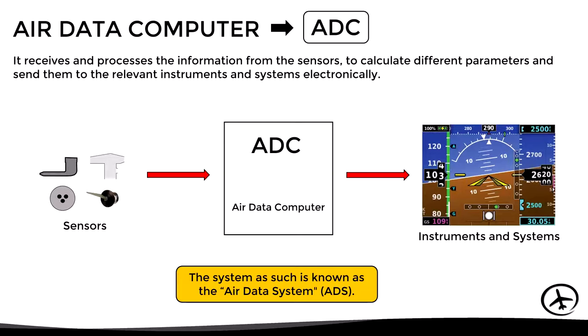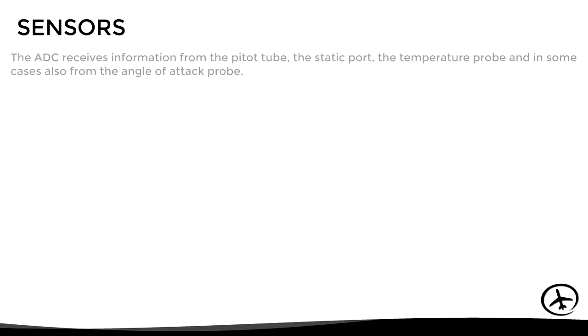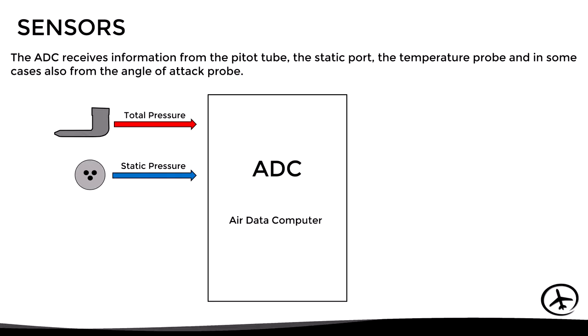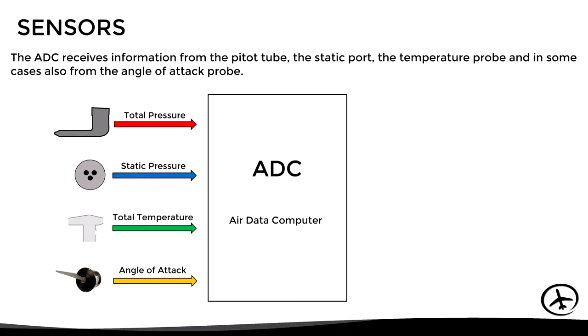Let's look at the sensors that provide information to the ADC. This unit receives information from the pitot tube, the static port, the total air temperature probe, and in some cases from the angle of attack probe.